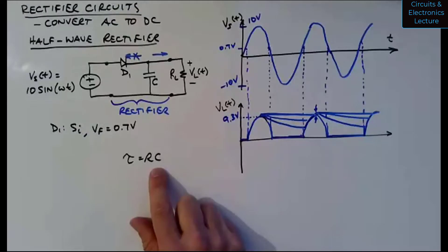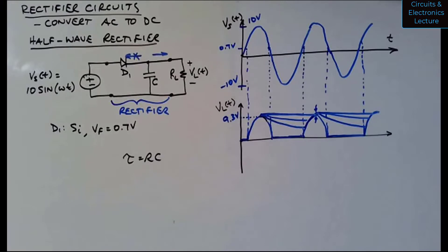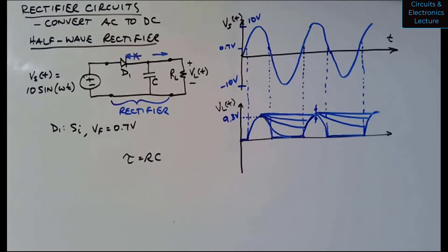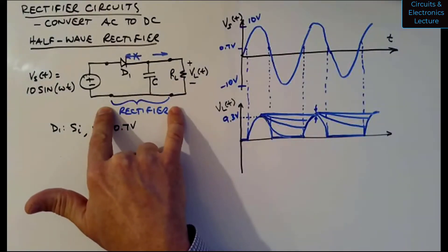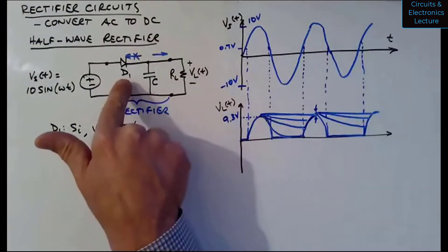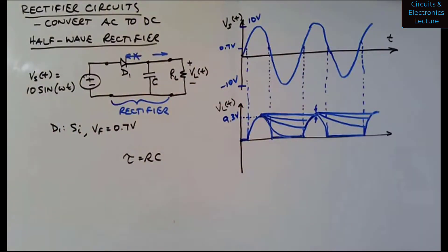A student confirms: ripple gets smaller as time constant gets larger. Yes — a small time constant discharges quickly toward zero, while a bigger time constant stretches out the decay. Another student asks what exactly constitutes the rectifier: it is the diode and capacitor together between source and load. Without those two elements, the output would simply equal the input sine wave.